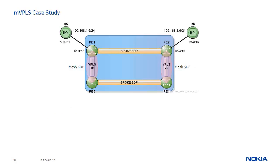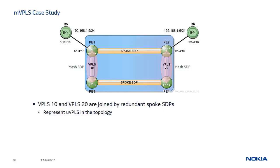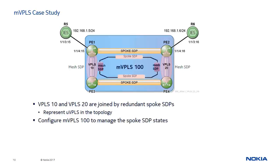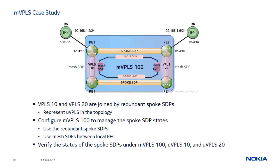We will now move to our lab environment to complete the case study. VPLS-10 and VPLS-20 are normal VPLSes joined by redundant spoke SDPs and will represent the UVPLSes in the topology. We will configure MVPLS-100 on routers PE1 to PE4 to include the two redundant spoke SDPs, as well as mesh SDPs between PE1 and PE3 and between PE2 and PE4 to mimic the forwarding topology. MVPLS-100 will run RSTP and set the state of one of the spoke SDPs to non-forward to prevent a forwarding loop. Finally, we will verify that the UVPLSes inherit the state of the spoke SDPs from the MVPLS.